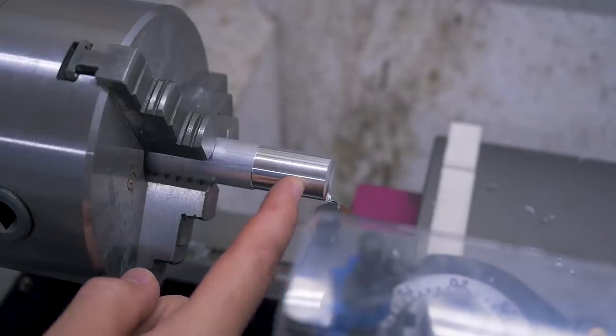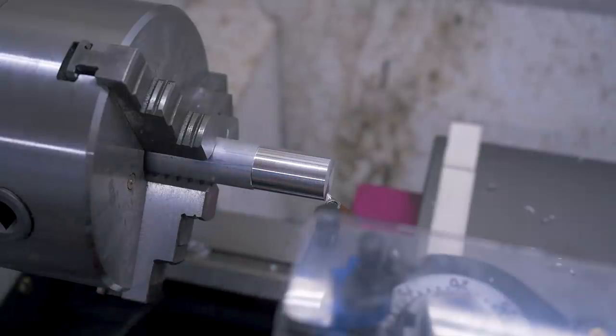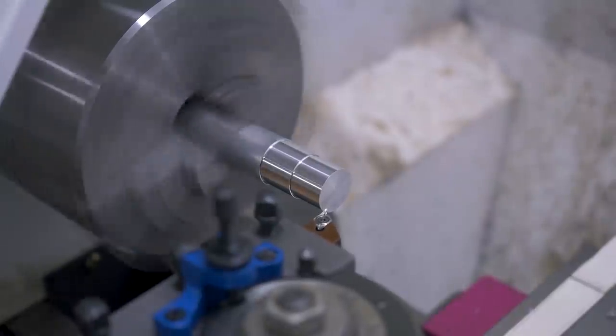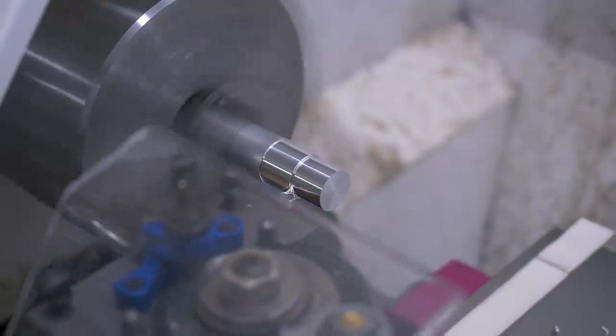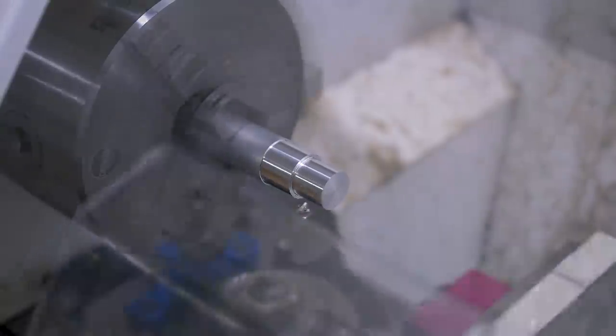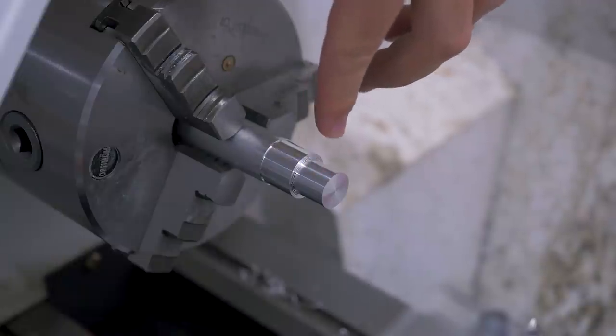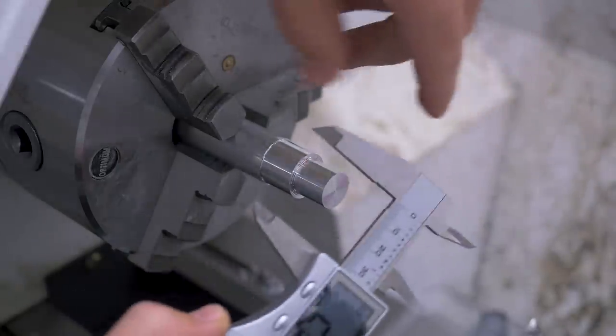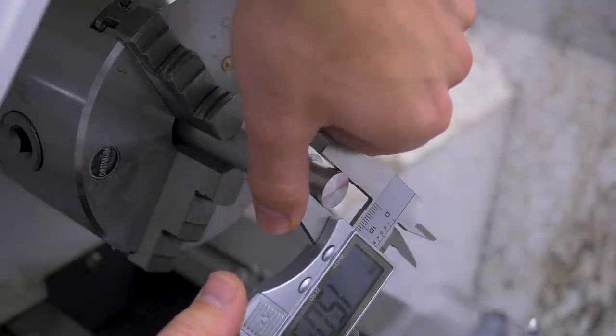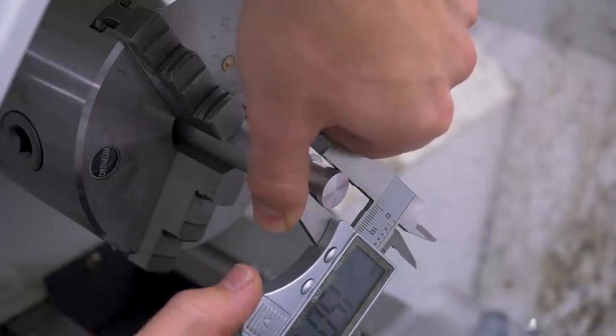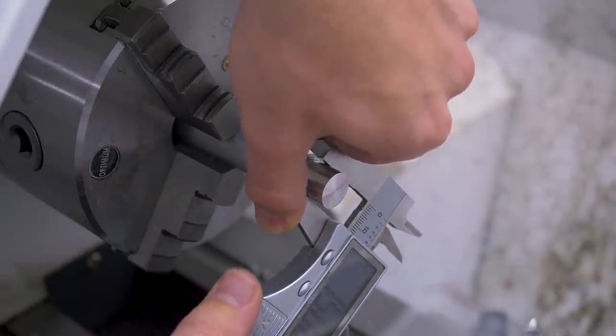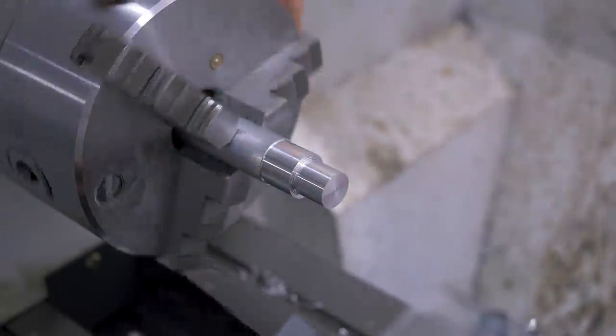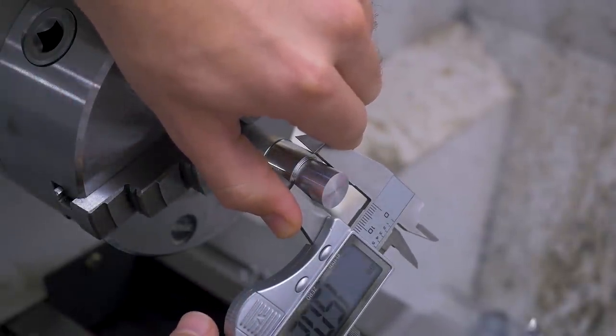Now I'm going to turn the first 15 millimeters to 15 millimeters diameter. I forgot to press record for one part. When I should have been at 16 millimeters, I also measured 16.01. And now I should be at 15.00, and I am at 15.04, 15.02, 15.03, 15.02.